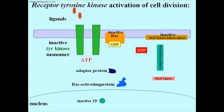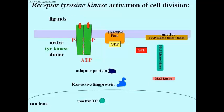Here's a well-known example of how a receptor tyrosine kinase actually mediates a mitogenic response — that is, how it causes cells to start dividing. It begins with ligand binding and autophosphorylation of the dimerized receptor, as we've just seen. The activated kinase domain recruits first an adapter protein from the cytoplasm.